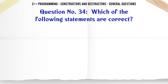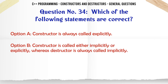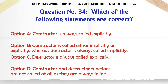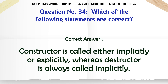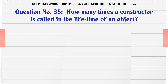Which of the following statements is correct? A. Constructor is always called explicitly. B. Constructor is called either implicitly or explicitly whereas destructor is always called implicitly. C. Destructor is always called explicitly. D. Constructor and destructor functions are not called at all as they are always inline. The correct answer is Constructor is called either implicitly or explicitly whereas destructor is always called implicitly.